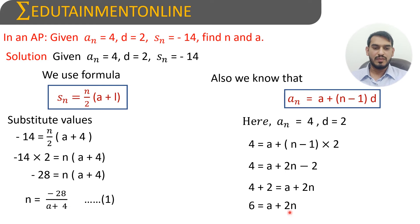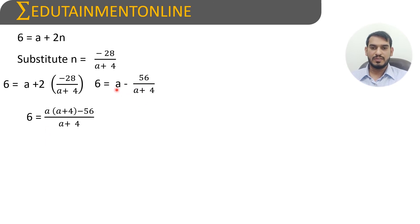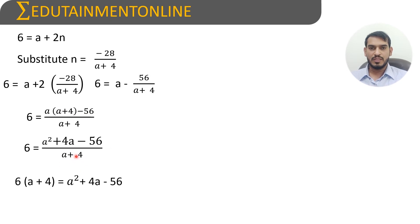We can substitute the value of n from equation 1 into 6 equals a plus 2n. We get 6 equals a plus 2 into minus 28 divided by a plus 4, which gives 6 equals a minus 56 divided by a plus 4. Simplifying: 6 equals a squared plus 4a minus 56 divided by a plus 4. Transposing the denominator: 6 into a plus 4 equals a squared plus 4a minus 56, giving 6a plus 24 equals a squared plus 4a minus 56.